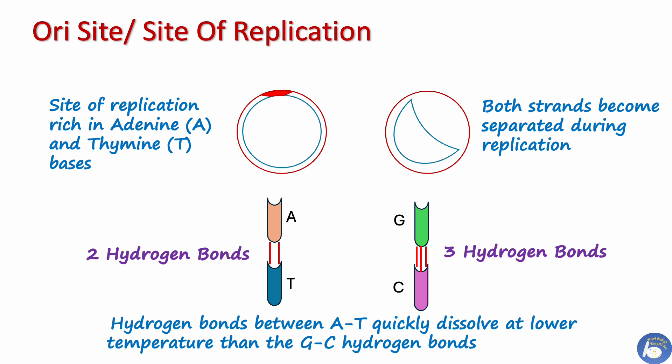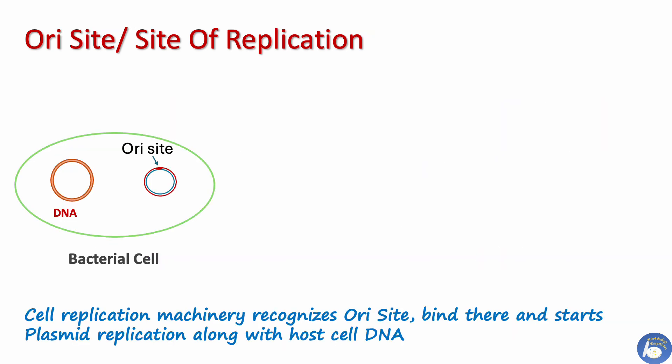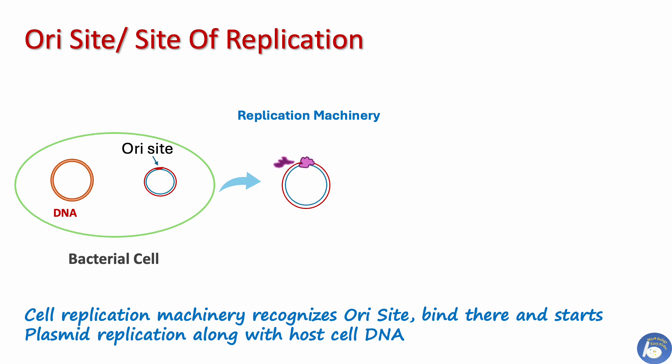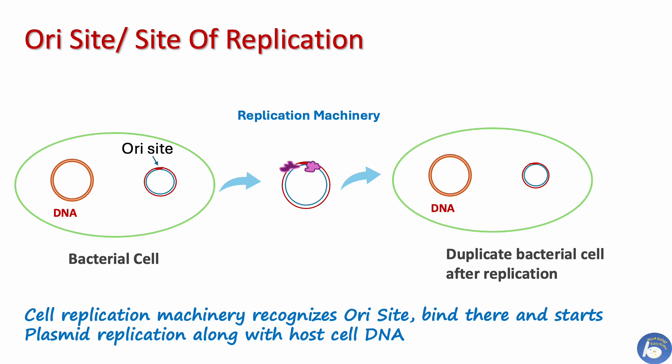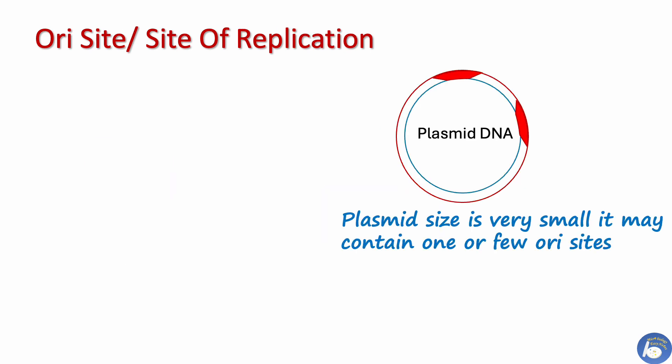This allows the replication machinery to come in and make more plasmid copies. The cell's replication machinery recognizes the plasmid ori site sequence and starts replication of the plasmid along with host cell DNA. That is how the presence of the ori site makes it possible for the plasmid to replicate independently. As plasmid size is very small, it may contain one or a few ori sites.